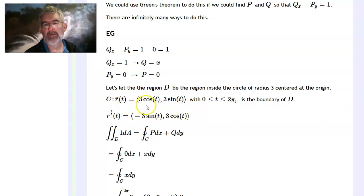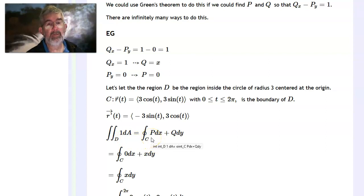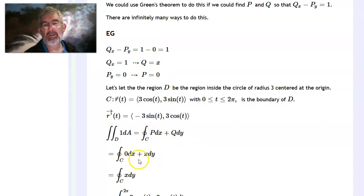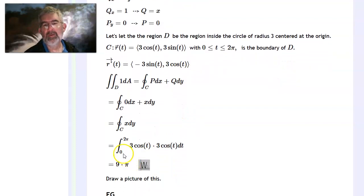By Green's theorem, the integral of 1 dA equals the line integral around the boundary of P dx + Q dy. With P = 0 and Q = x, this becomes just the line integral of x dy. Plugging in the parameterization, x = 3cos t and dy = 3cos t dt, so the integral becomes ∫₀²π 9cos²t dt.